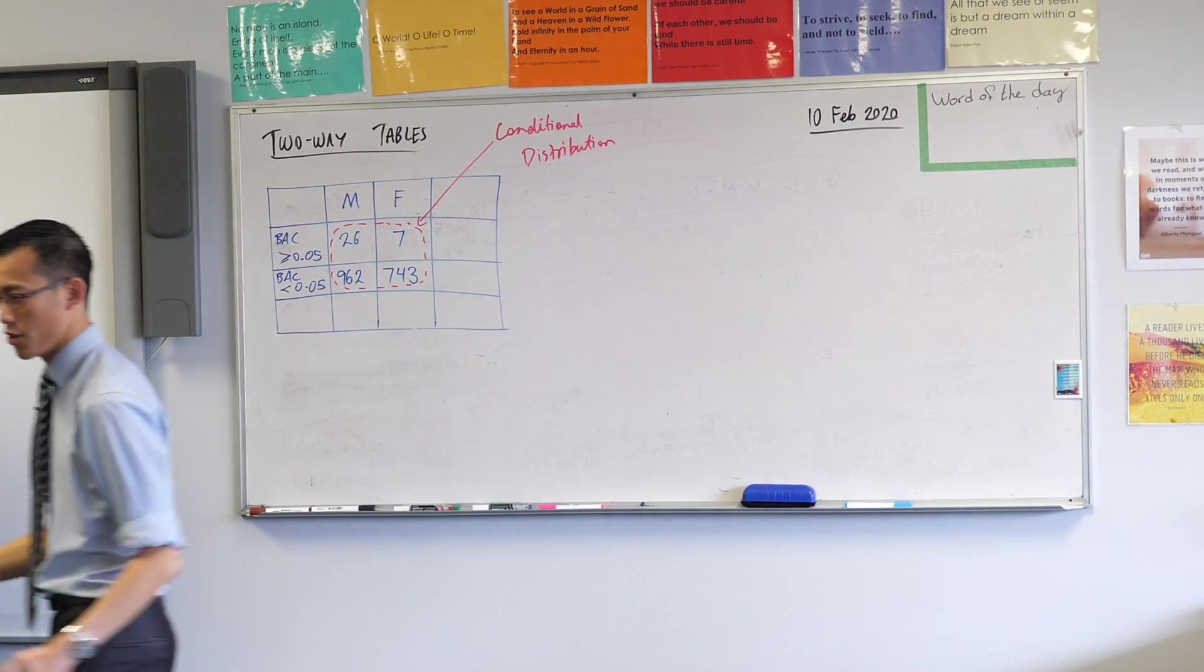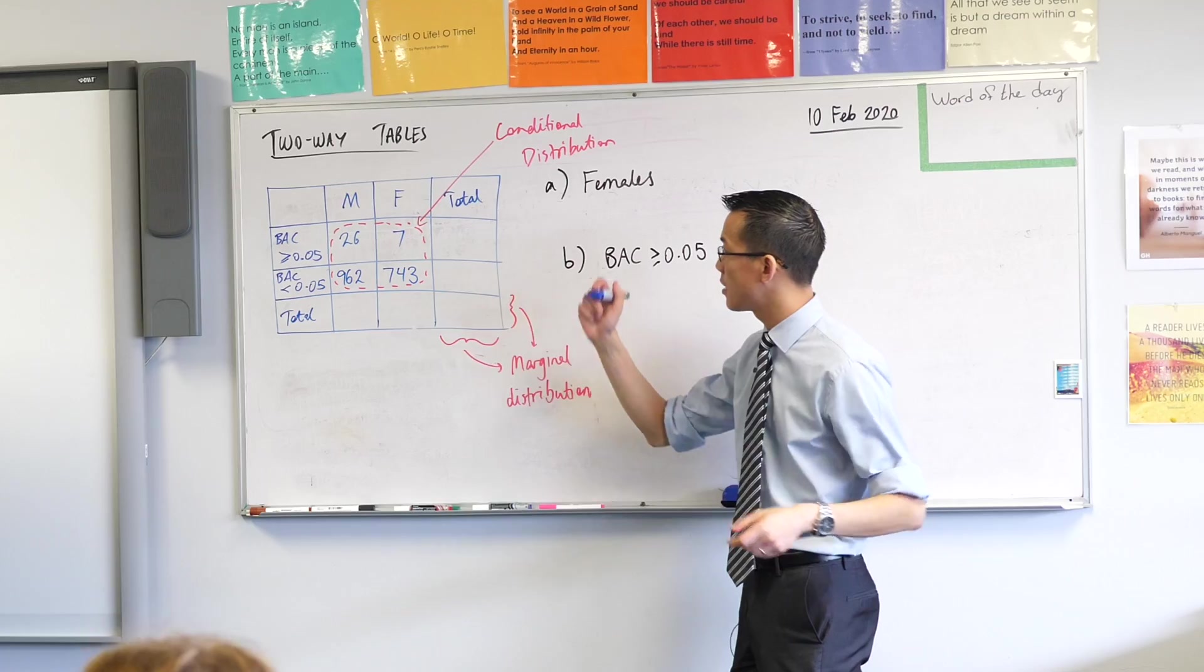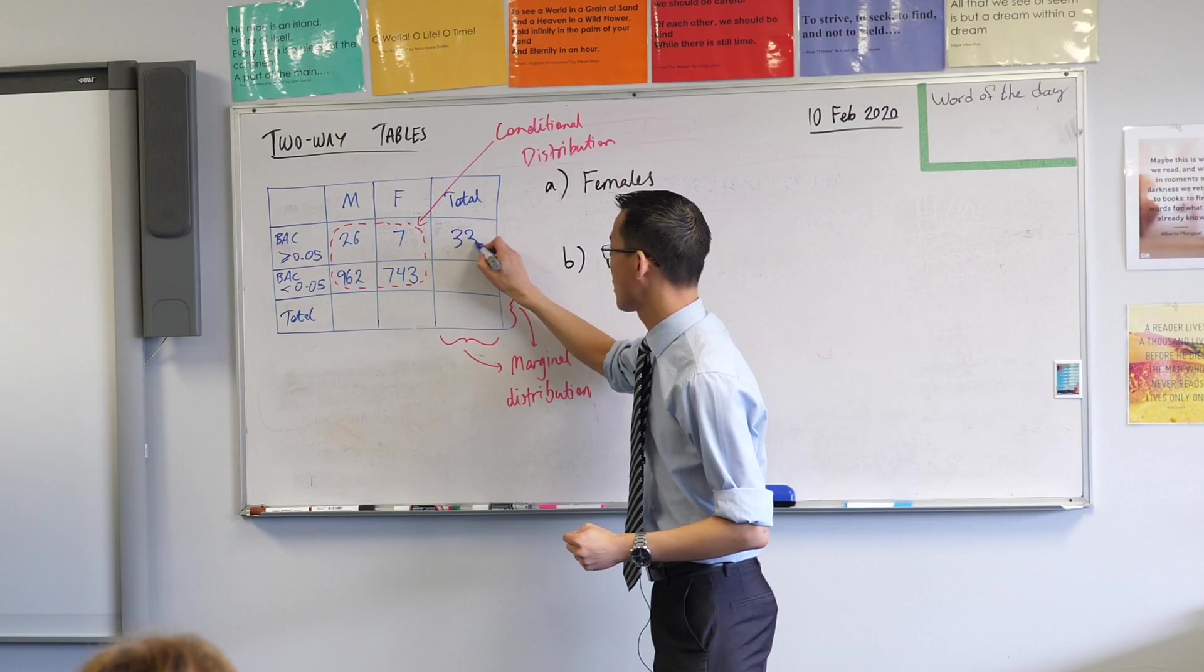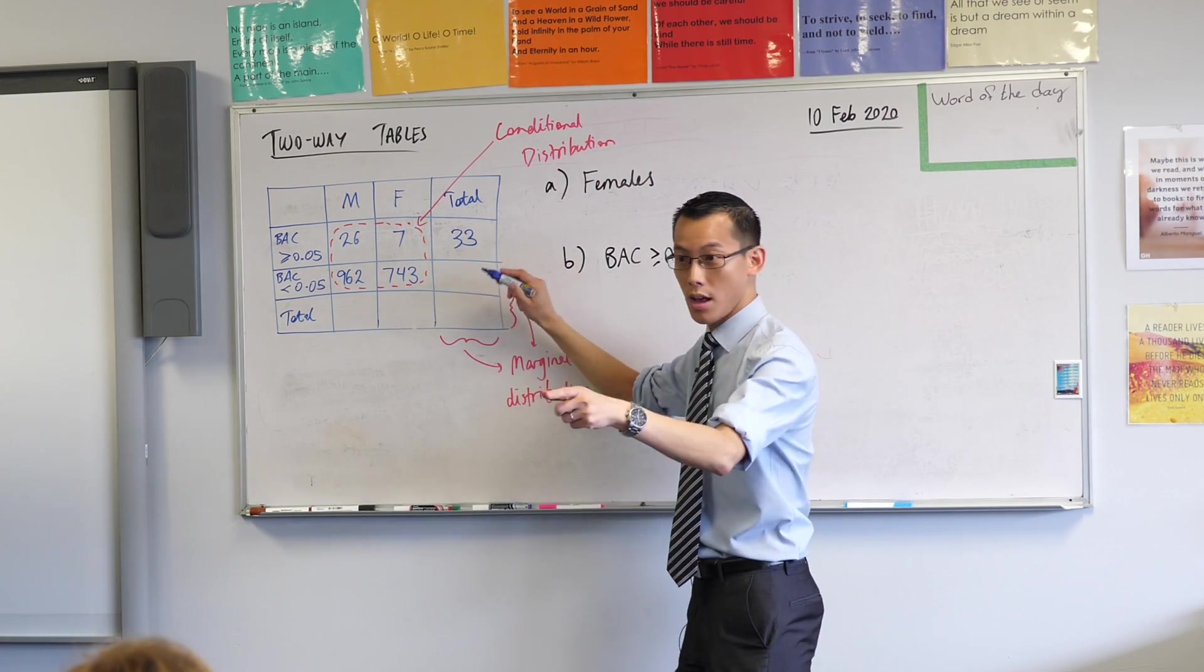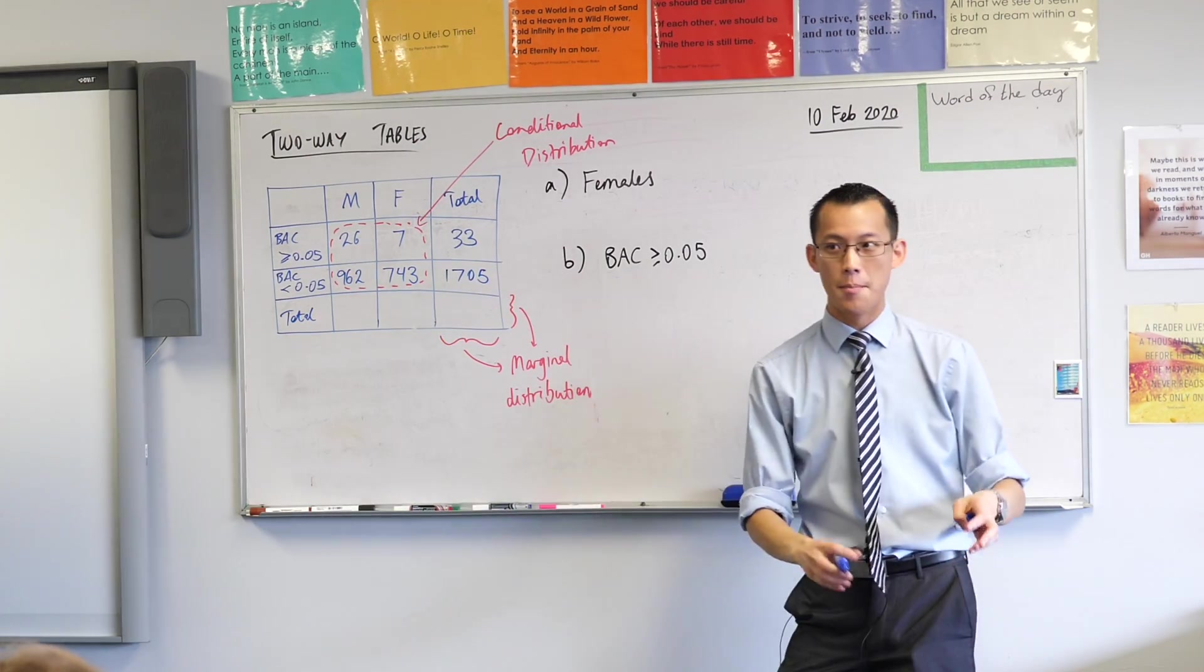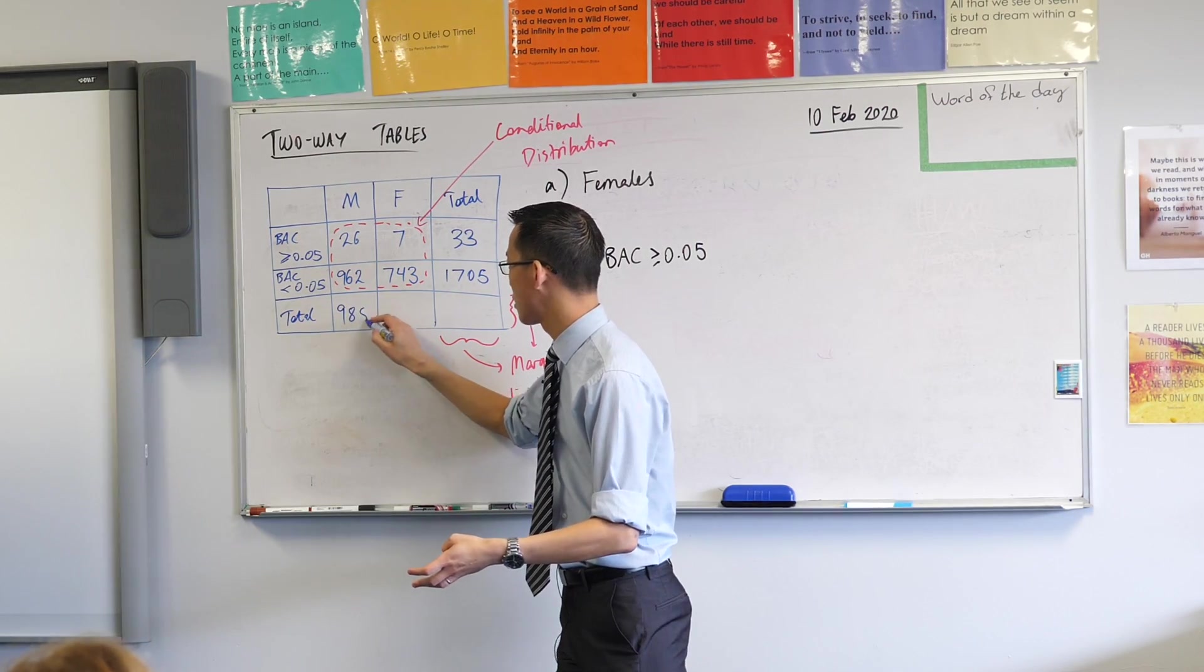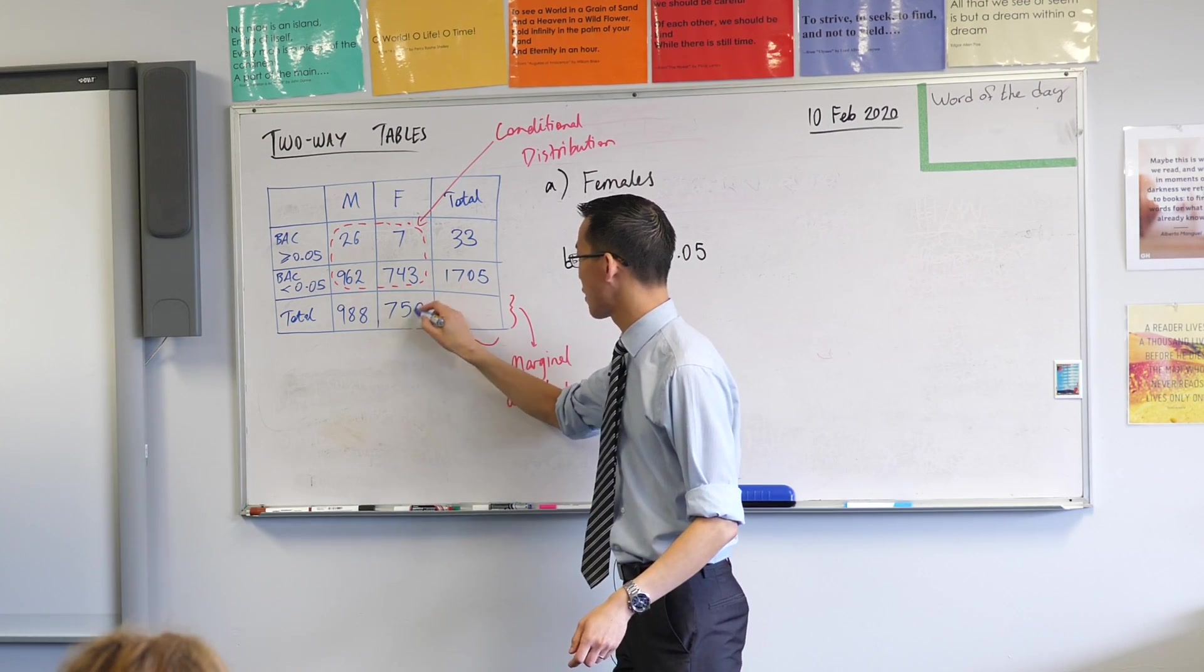Can someone tell me the number of drivers who were over the limit in total? 33. We can just do that one. What was the total below the limit? 1,705. Male drivers? 988. Female drivers, Zachy? 750. Exactly.